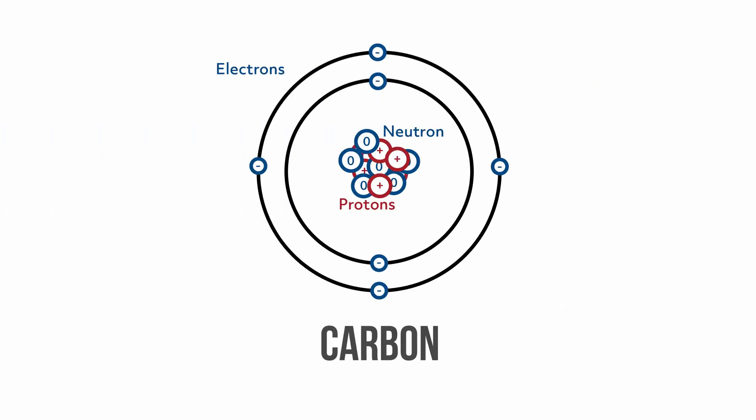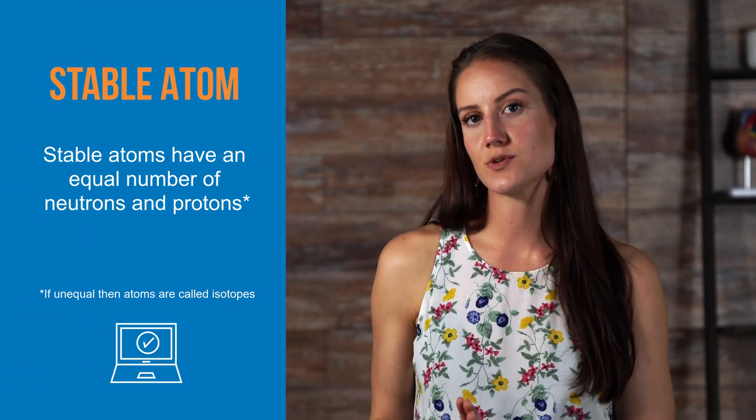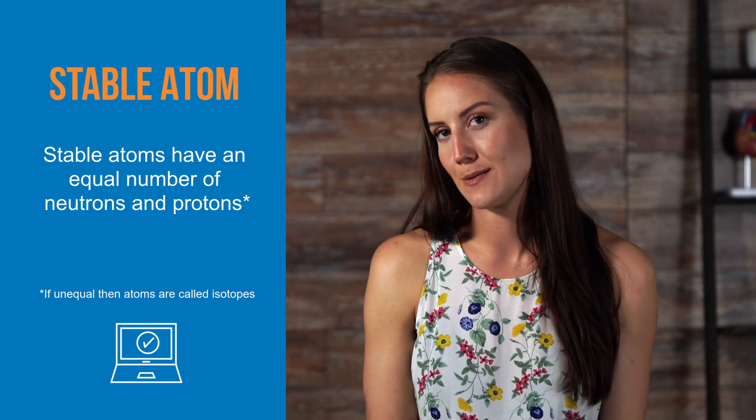In general, an atom will have a specific number of neutrons in the nucleus, meaning the atom won't lose or gain any neutrons for a very long time. This is called a stable atom. Usually, a stable atom has an equal number of neutrons and protons, but there are exceptions.